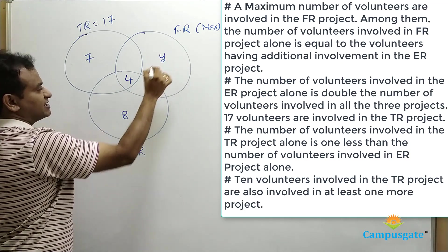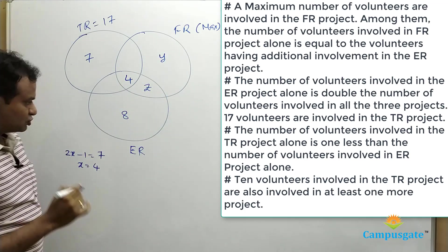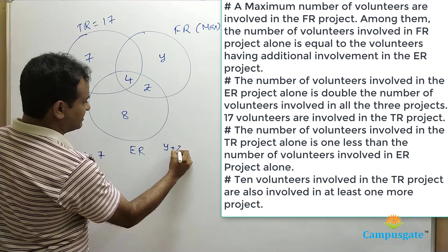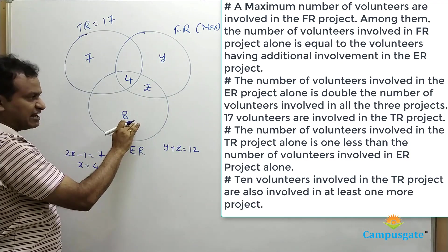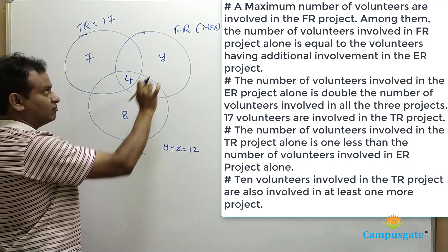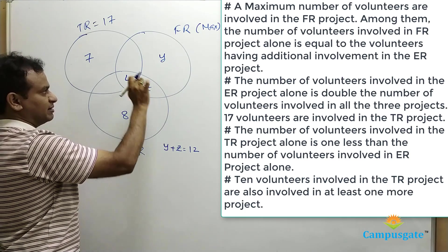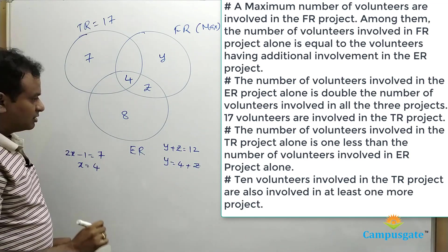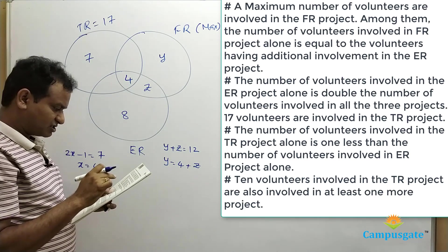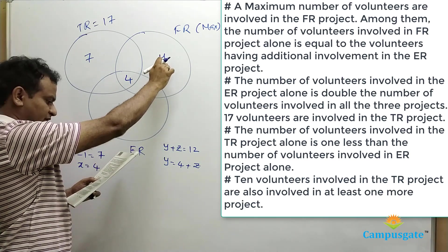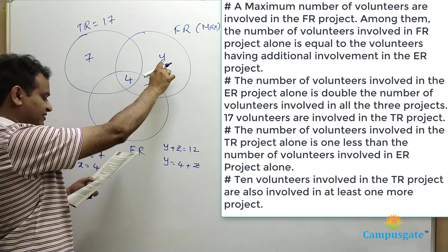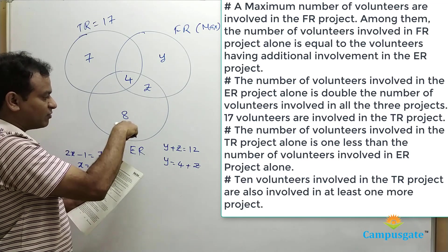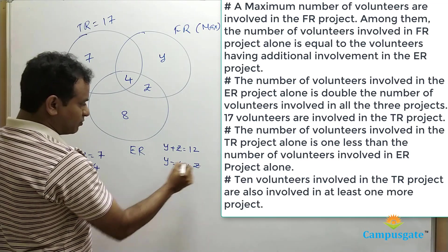Let us represent the FR-only region as Y and the FR∩TR (not ER) region as Z. So we have Y plus Z equals 12, because the sum of those three values equals 20 and the all-three region is 8. Also, from clue 1, Y equals 4 plus Z, because the FR-alone value equals the number of volunteers with additional involvement in ER — which is 4 plus Z.